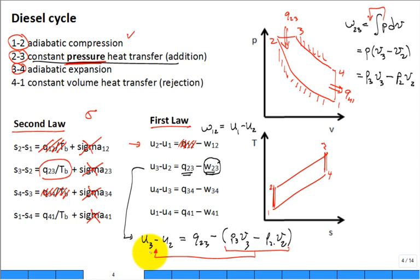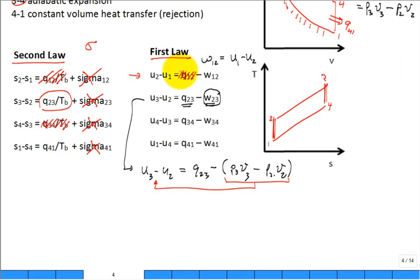And for some odd reason, for the Otto cycle the heat addition q 2 to 3 is a change in u. Yeah, you're right. And then my notes say that the q 2 to 3 for the diesel cycle is a change in h. Why? I get that question all the time. Here it is right here.